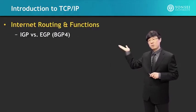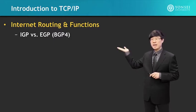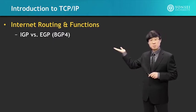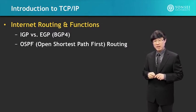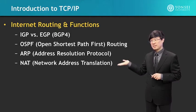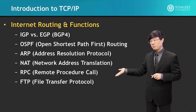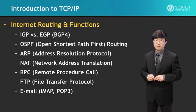In the next chapter about Internet Routing and Functions, we'll study about IGP and EGP, which include the BGP4 protocol. We'll study about OSPF routing technology, then ARP, NAT, RPC, FTP, and email technology.